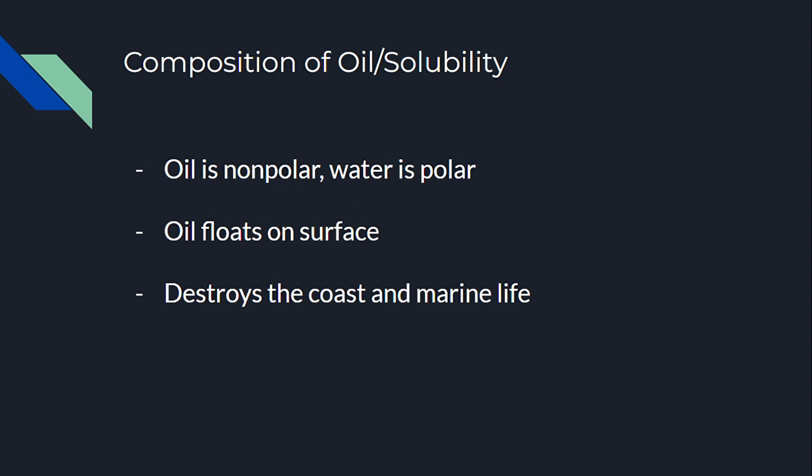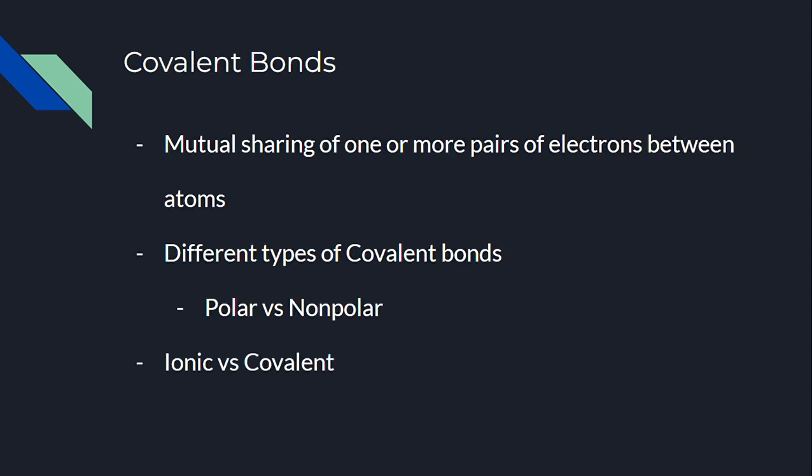The next topic is covalent bonding. Covalent bonding is defined as the mutual sharing of one or more pairs of electrons between atoms. There are different types of covalent bonds, such as polar versus nonpolar, which I mentioned before. An example of a nonpolar substance is oil.